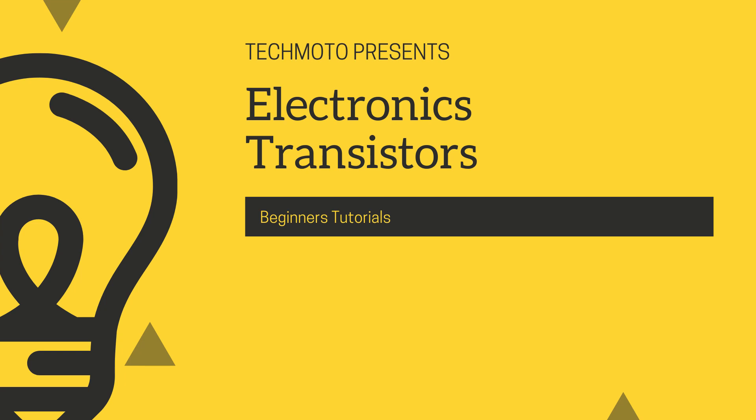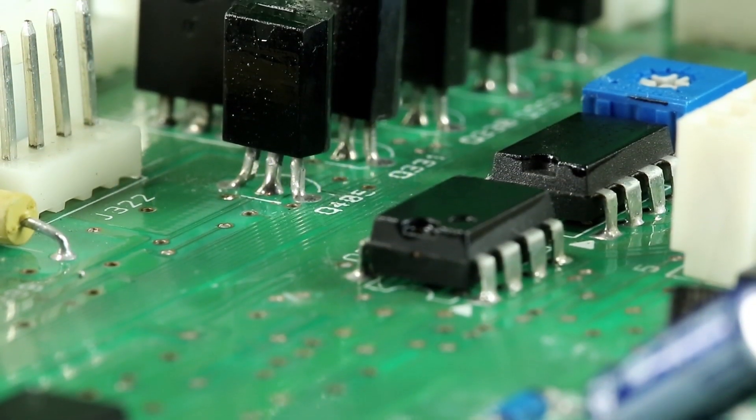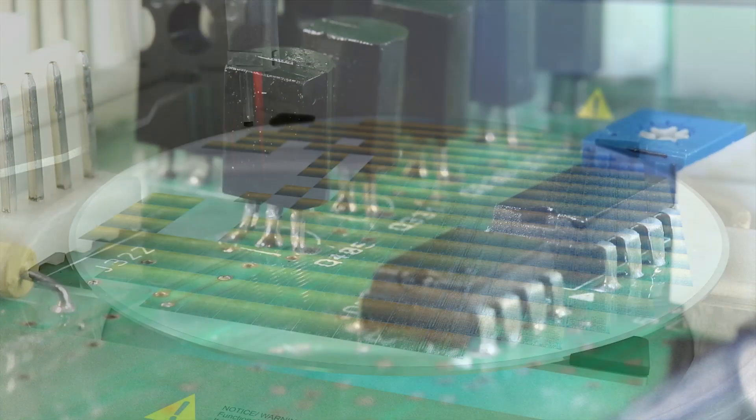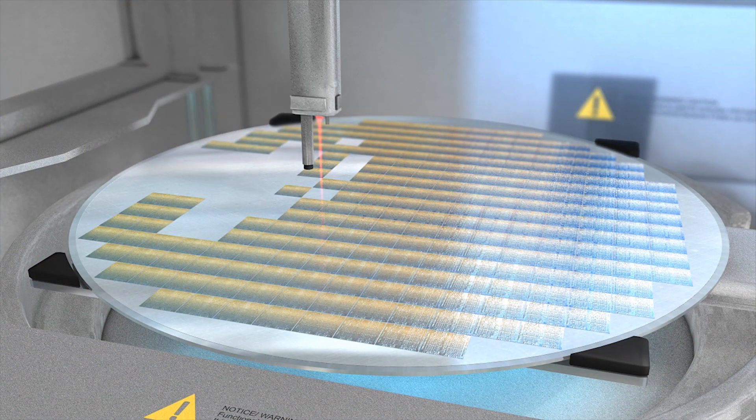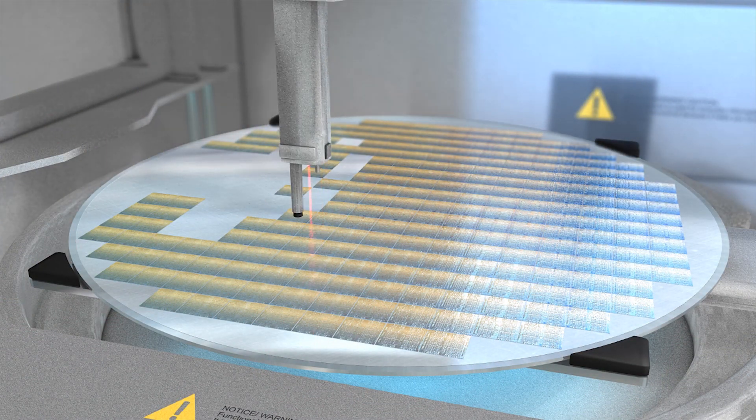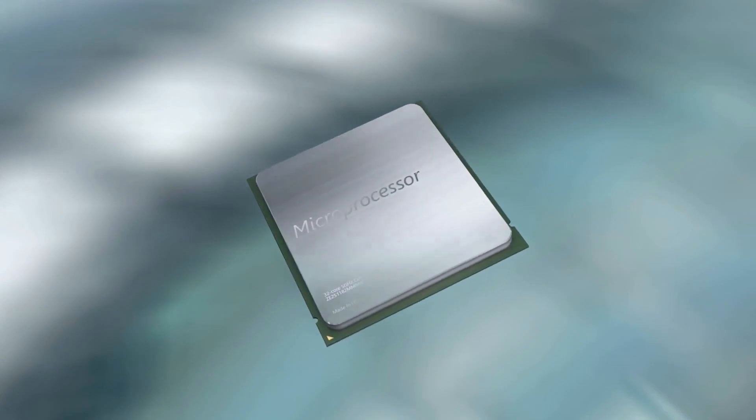Welcome back to the TechMoto channel and the electronics playlist. Today we're going to be looking at transistors. Transistors are the fundamental building block of modern electronic devices and revolutionize the field of electronics. But what are they made of and how do they work? And that's what we're going to go through today in this video.